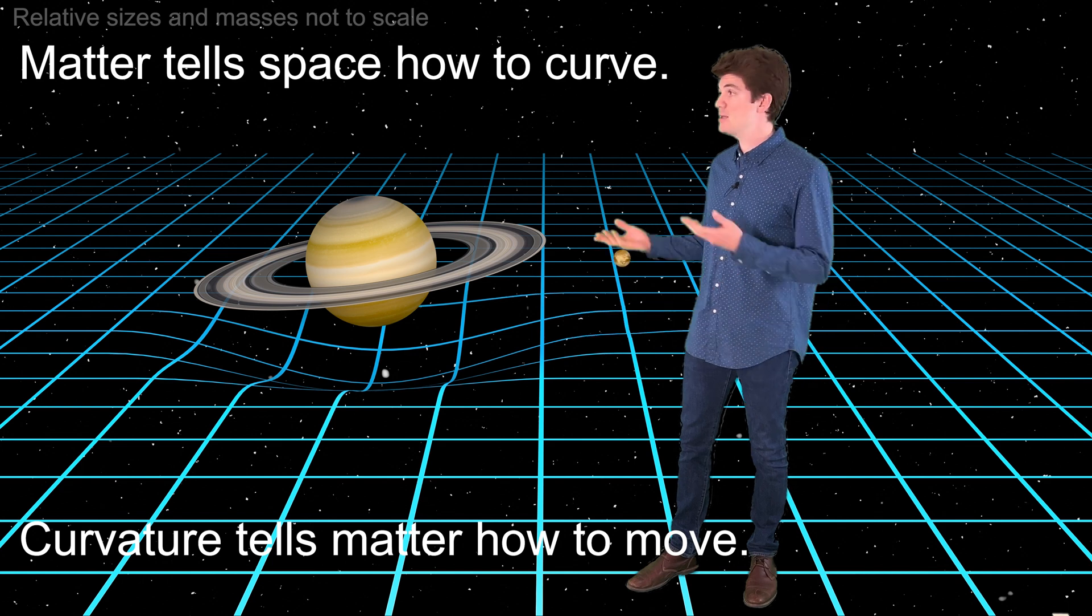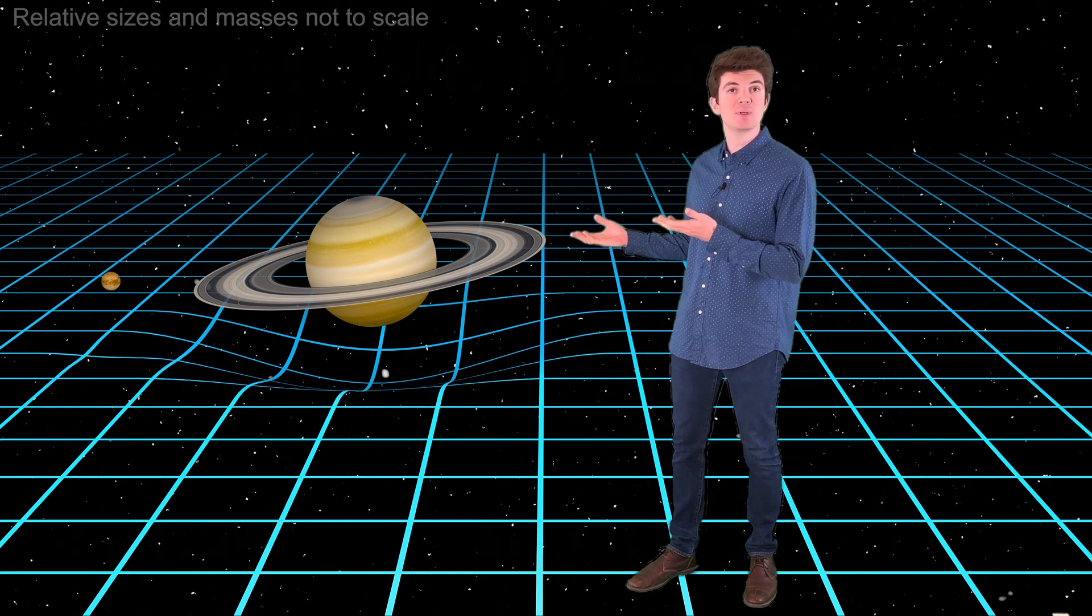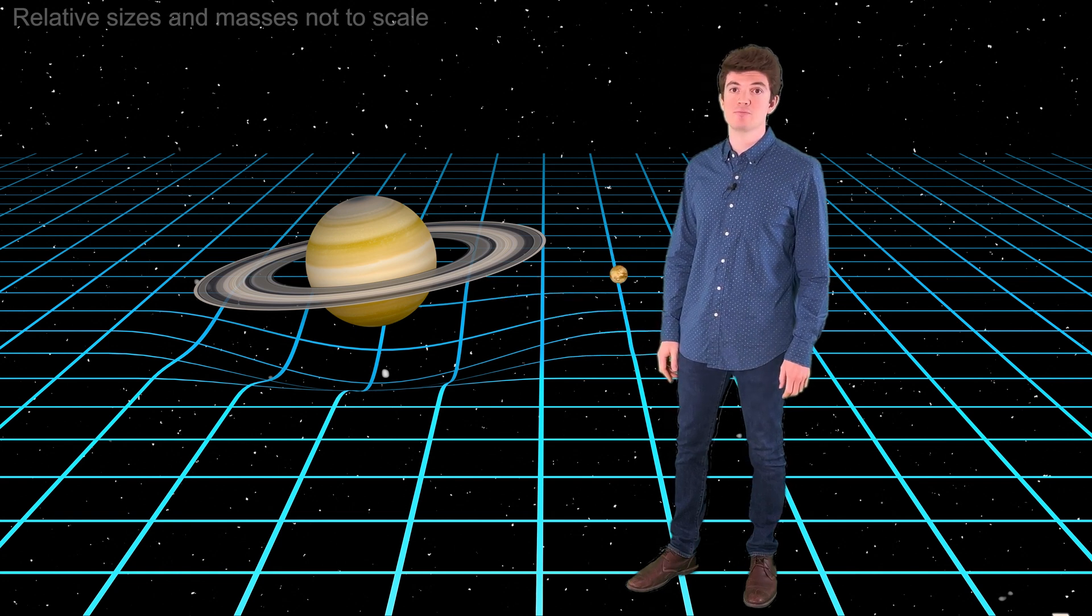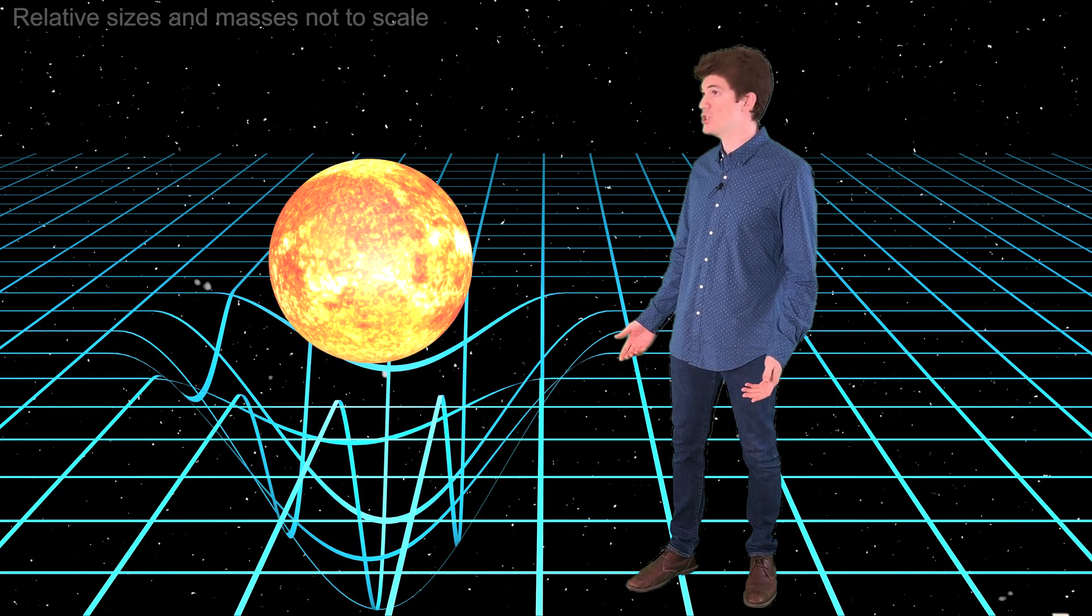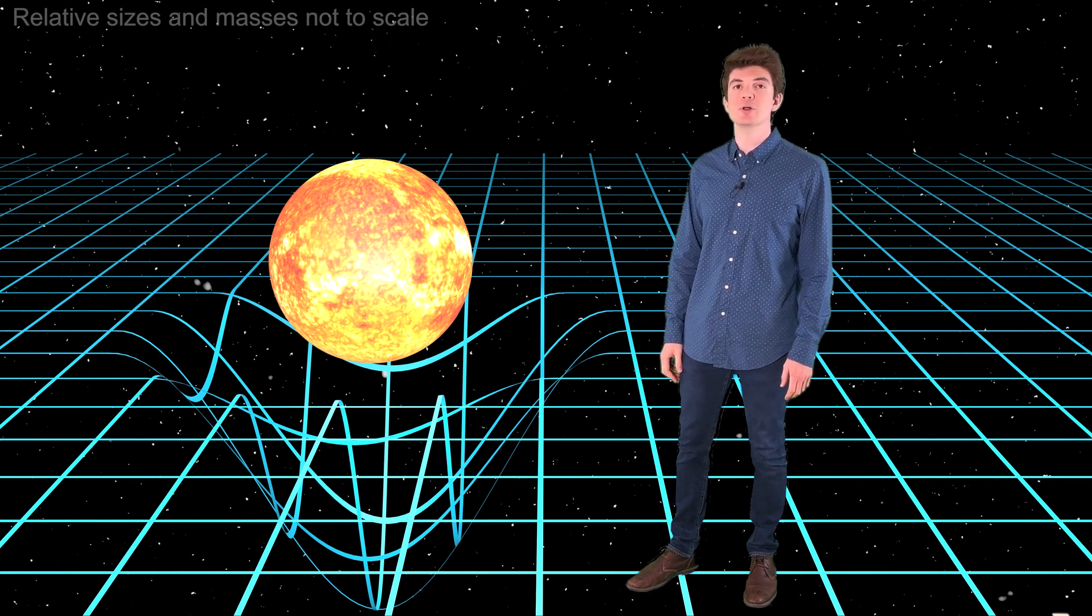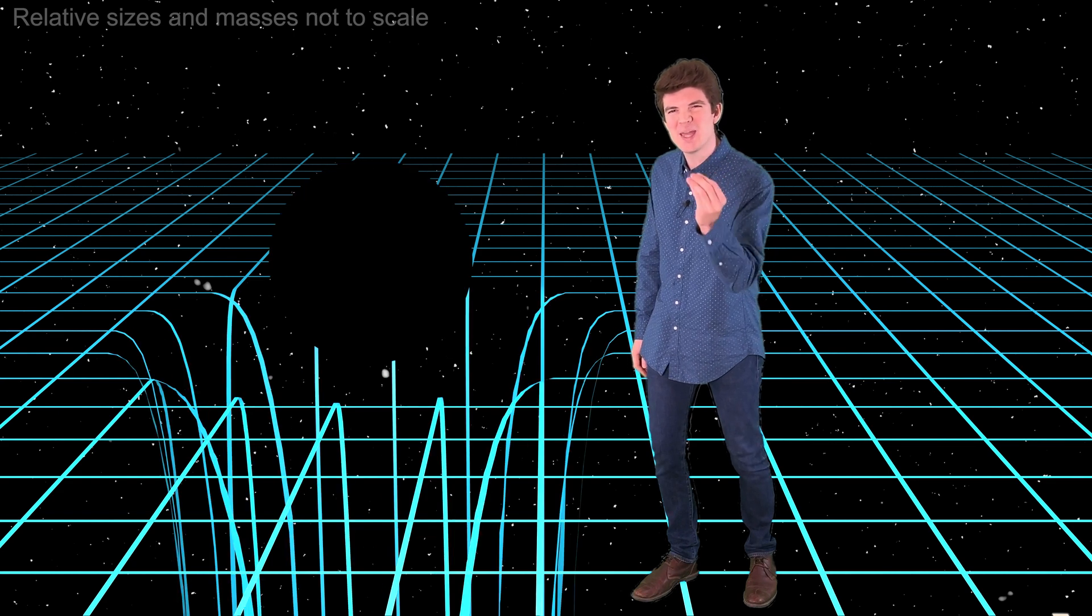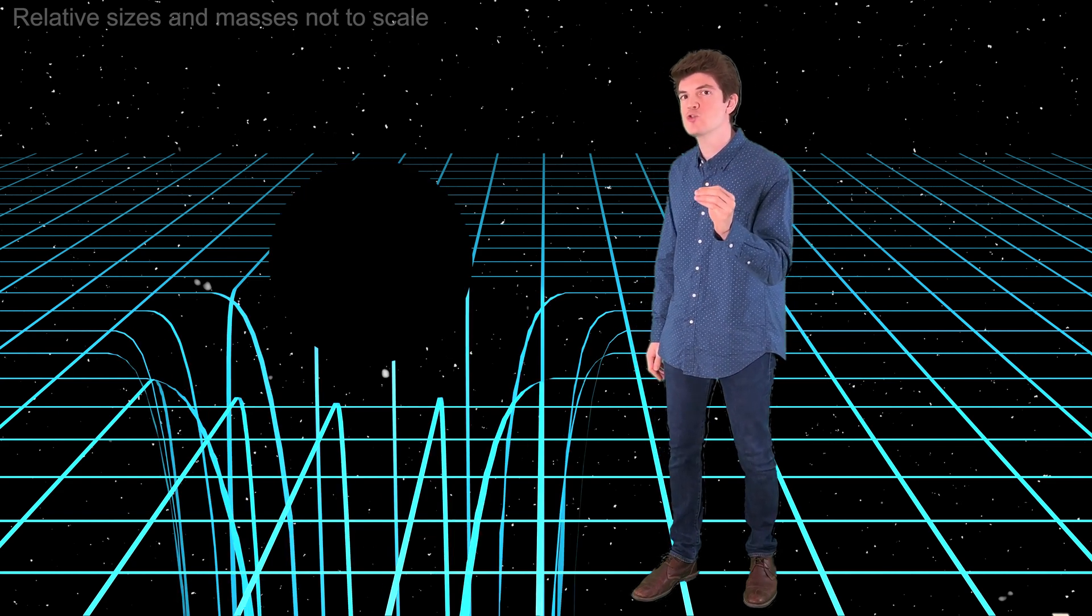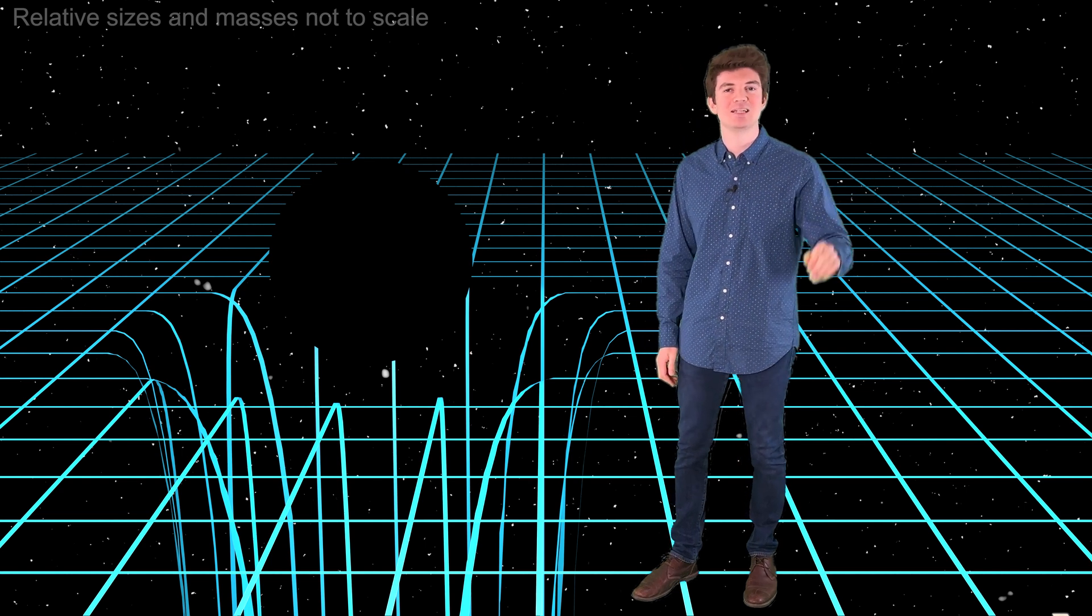A planet might deform space-time like this. But the amount of curvature depends on the mass of the object. So a star, which is much more massive, will warp space-time even more. But a black hole will pinch space-time to an infinitesimal point so drastically that not even light can escape.